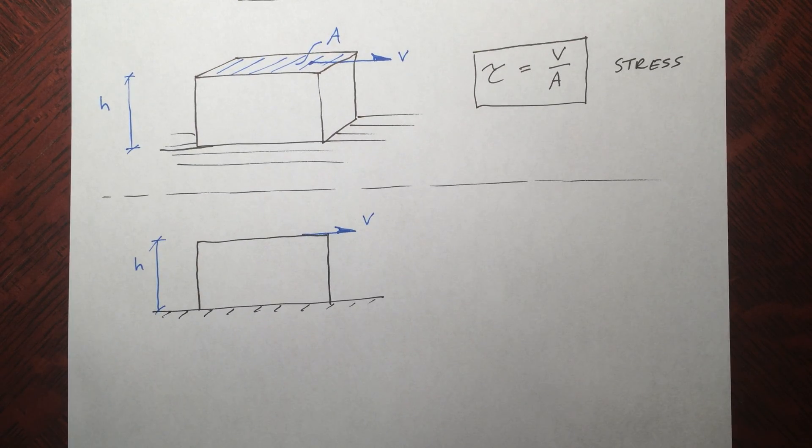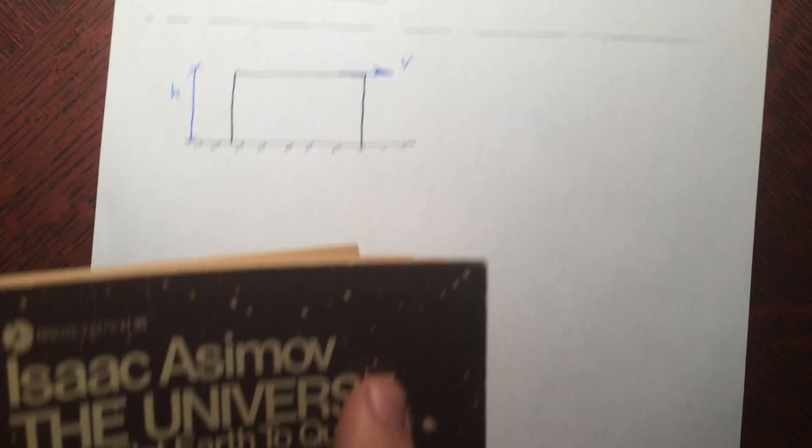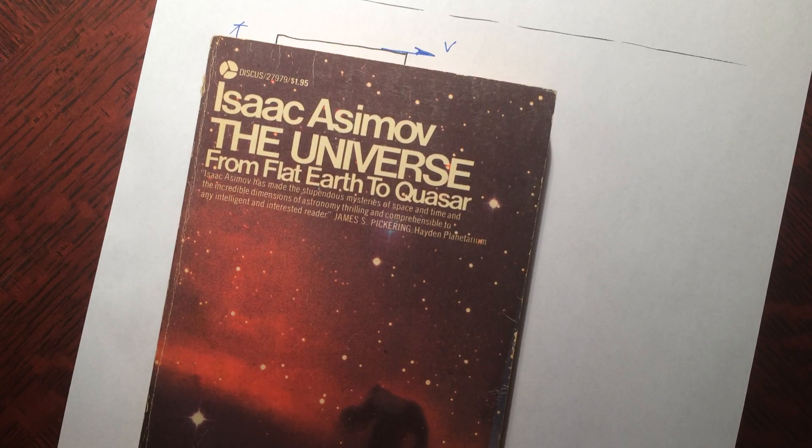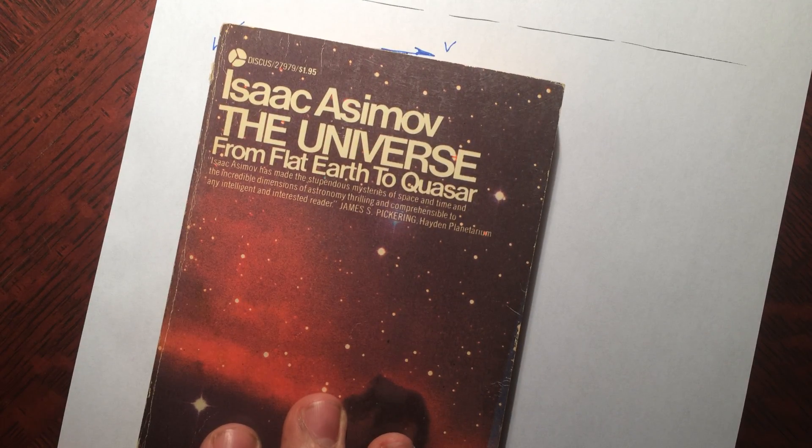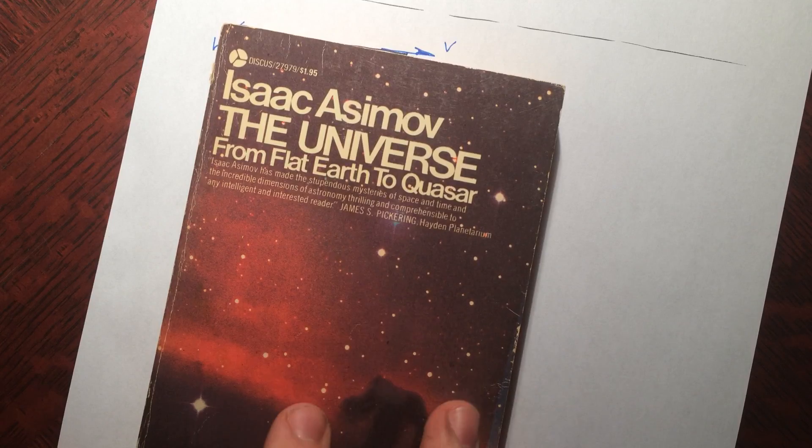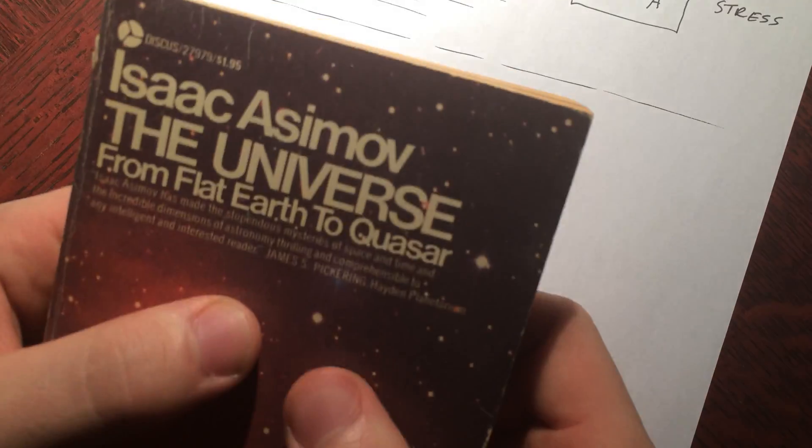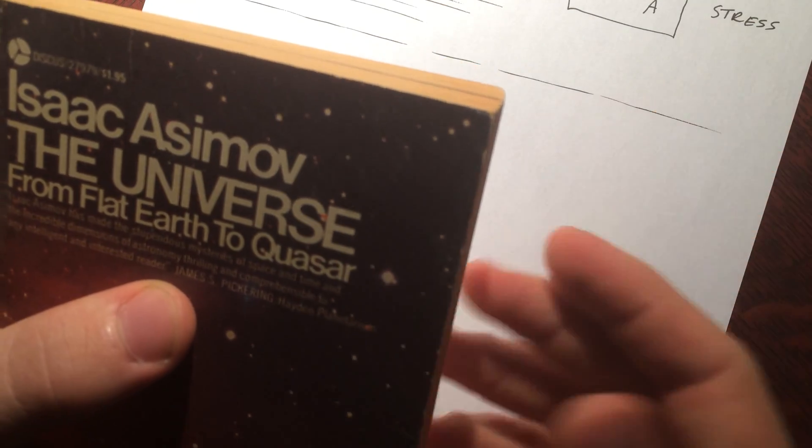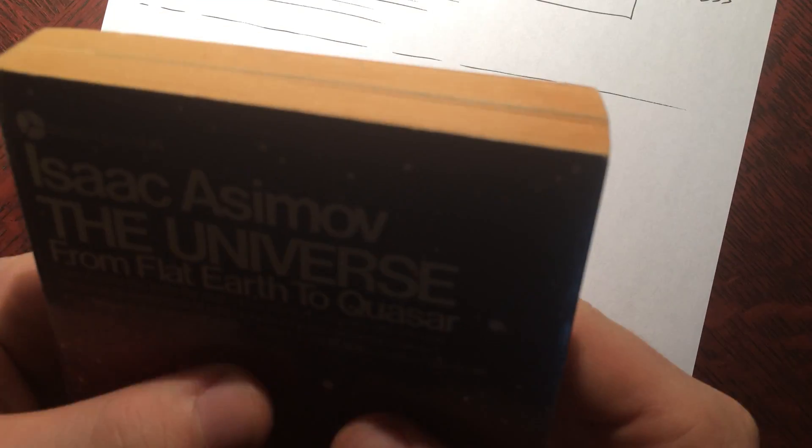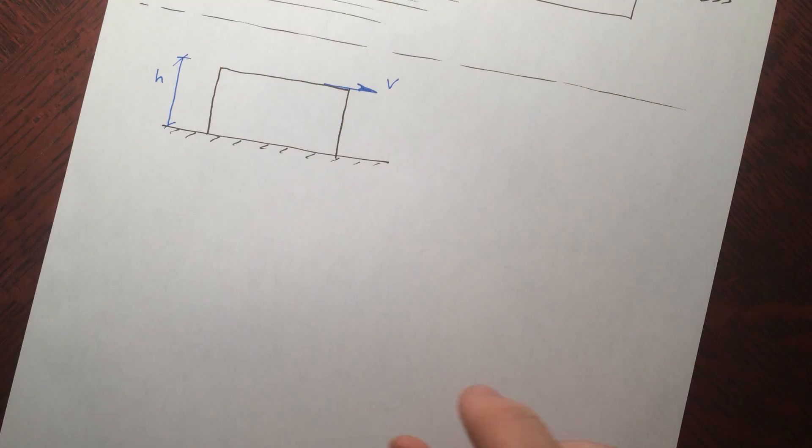And we're still shearing it with the force V. Now what is this box going to do in reaction to this? It's going to deform. But how is it going to deform? Let's get some help here from Isaac Asimov. Wait, his book, great book, you should read it.